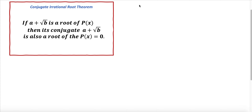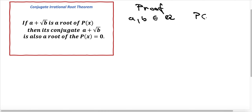So let's prove this simply. Let a and b be elements of the rational numbers. If the polynomial function p of x equals 0, one of the solutions is x equals a plus square root of b.